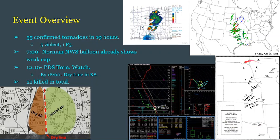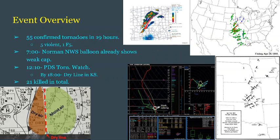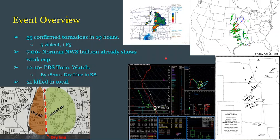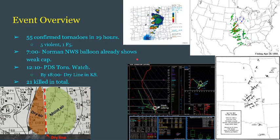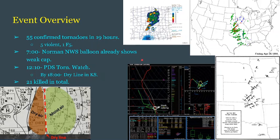All the tornado paths are seen on the lower right, and all the storm reports from this event are seen above that, along with the GIF causing the laser pointer issues. The supercells that occurred in southern Kansas are visible here. There were five violent tornadoes produced by this outbreak, with one of them being an F5 — the Andover F5.